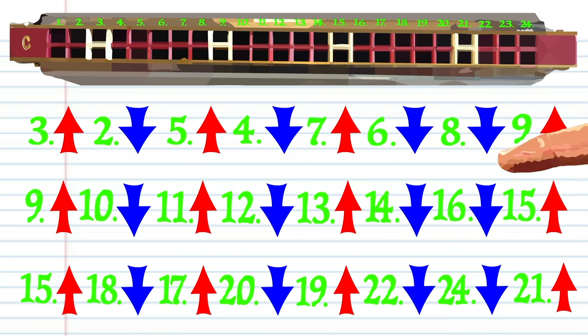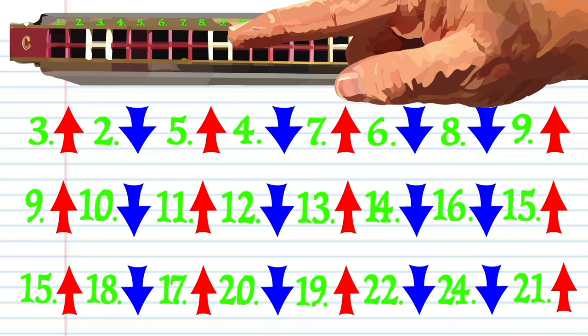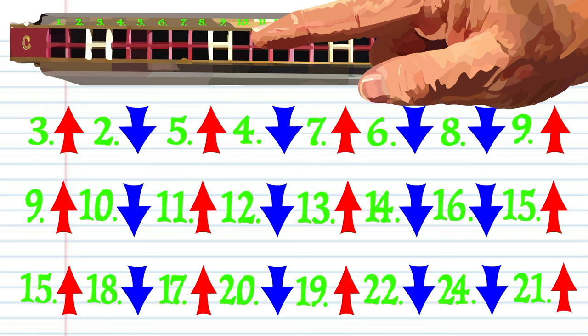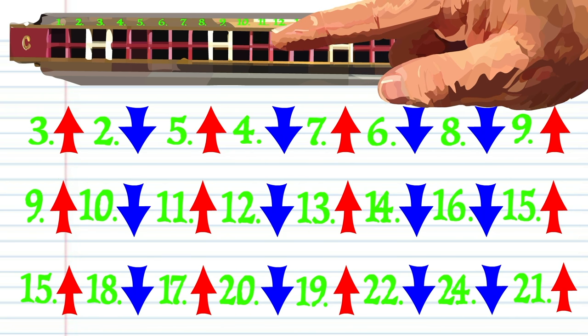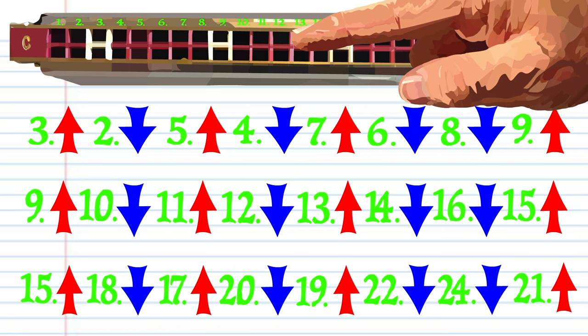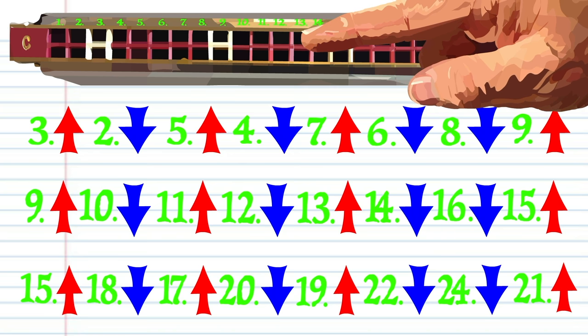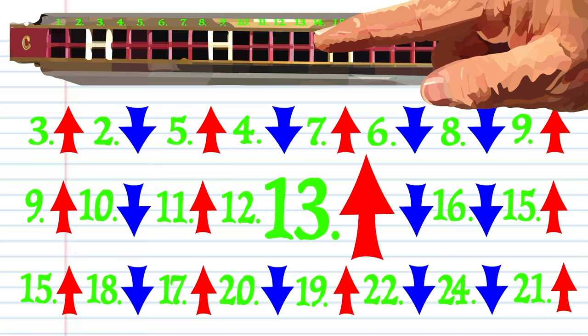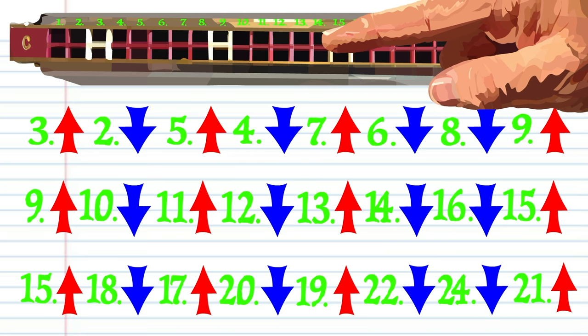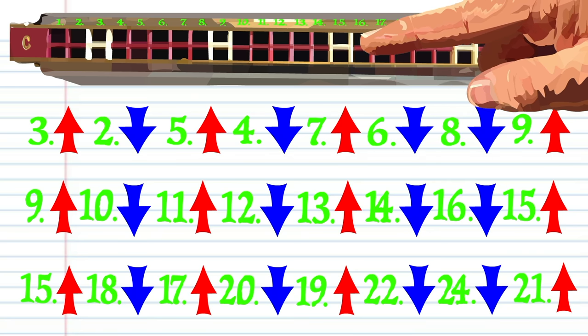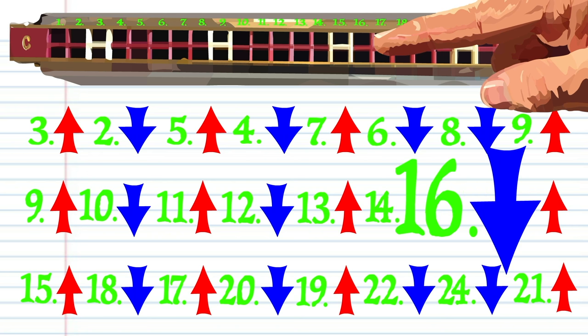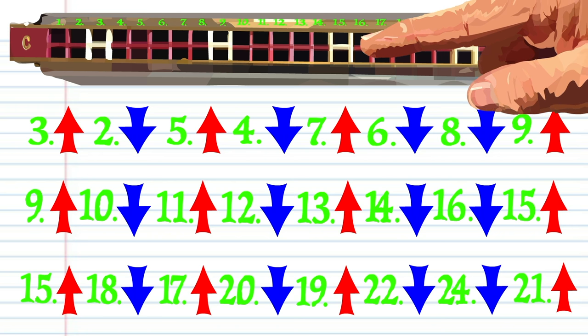The second octave would look like this: blowing into 9, breathing in through 10, blowing into 11, blowing into 12, blowing into 13, breathing in through 14, breathing in through 16, and blowing into 15.